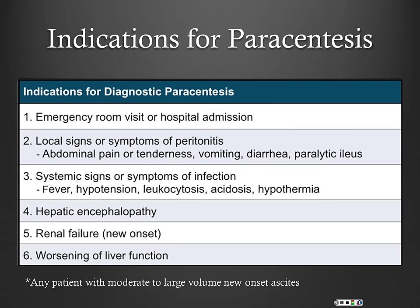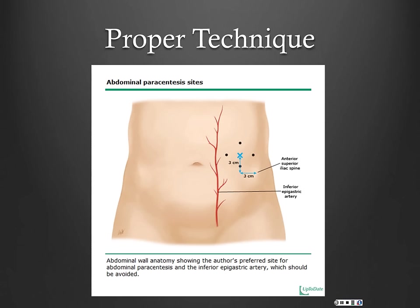If they have unexplained development of hepatic encephalopathy, new onset renal failure, or worsening of liver function — all those are reasons to do a paracentesis on a patient with cirrhosis. Any patient who develops ascites without a prior diagnosis of cirrhosis and has moderate to large volume new onset ascites obviously needs a paracentesis to figure out the cause.